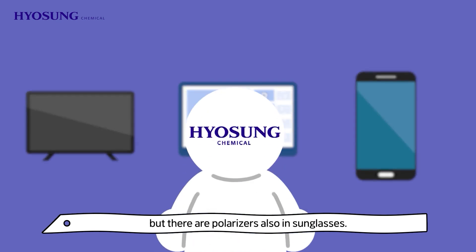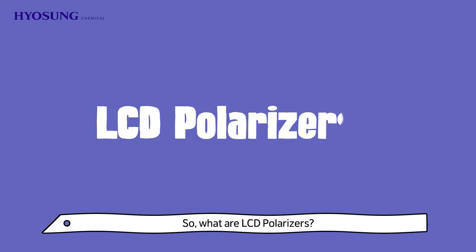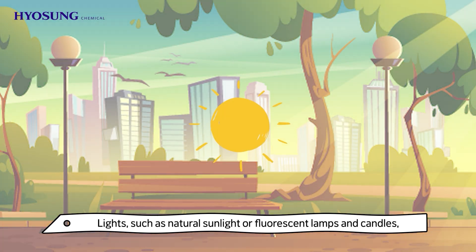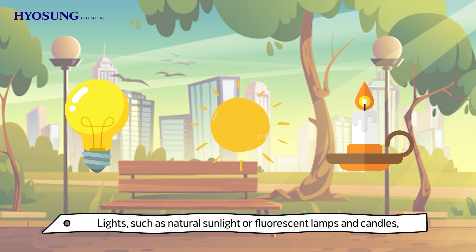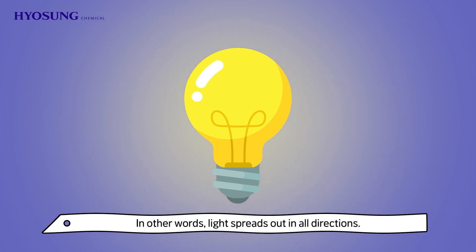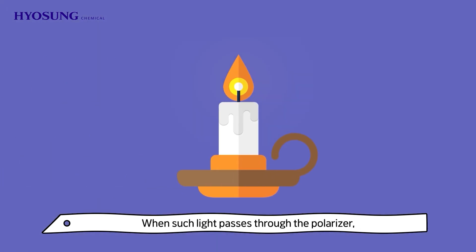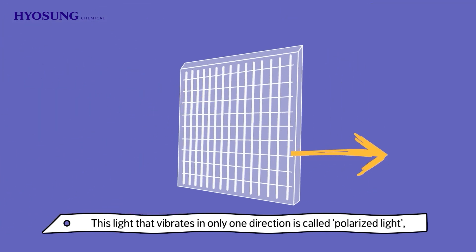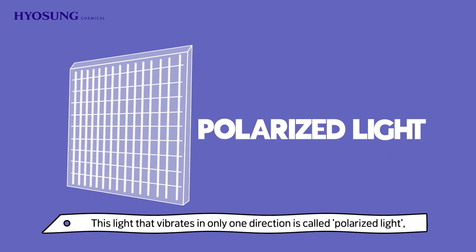But there are polarizers also in sunglasses. So, what are LCD polarizers? Lights, such as natural sunlight or fluorescent lamps and candles, carry light that vibrates in all directions. In other words, light spreads out in all directions. When such light passes through the polarizer, only light vibrating in a specific direction passes through. This light that vibrates in only one direction is called polarized light.